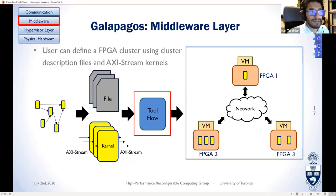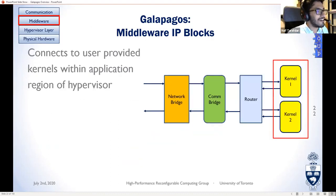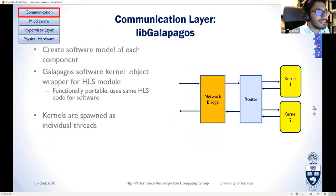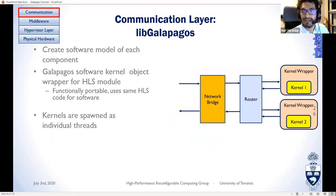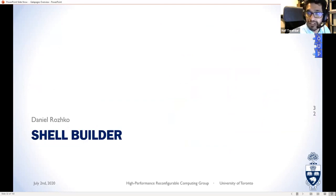The output shows AXI-Stream IP cores split across multiple nodes, with communication between them — whether on the same device or different devices — abstracted from the user. Lastly, we have the communication layer connecting a CPU node to a hardware node. Every IP core has a hardware equivalent, so a CPU kernel can communicate to a hardware kernel seamlessly. Things can be moved from CPU to hardware and vice versa. On that note, I'll hand it over to Daniel who will cover the shell builder.